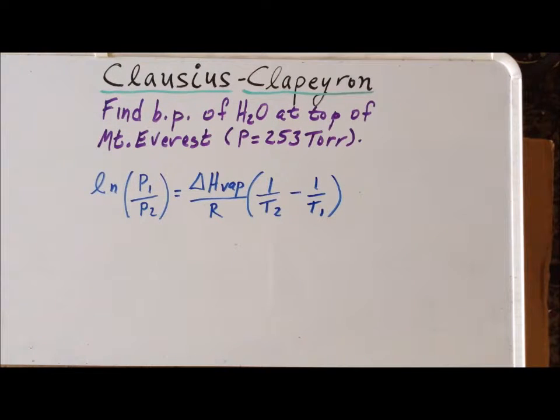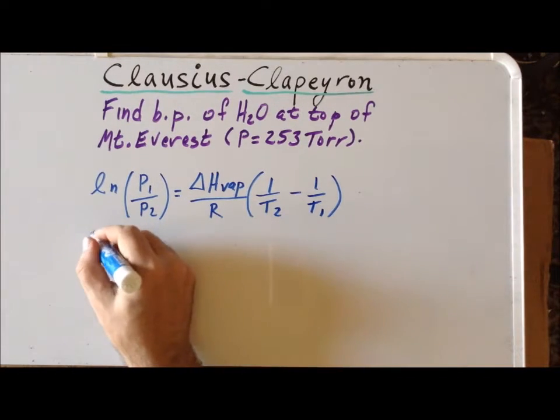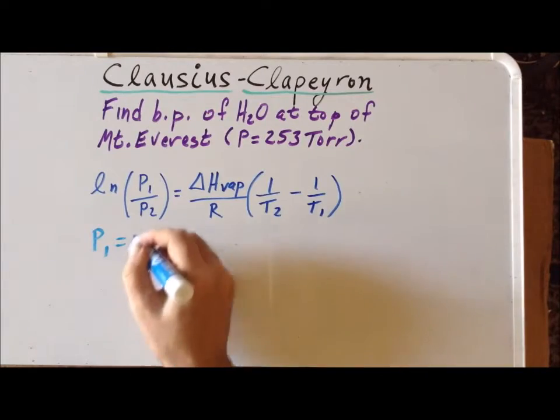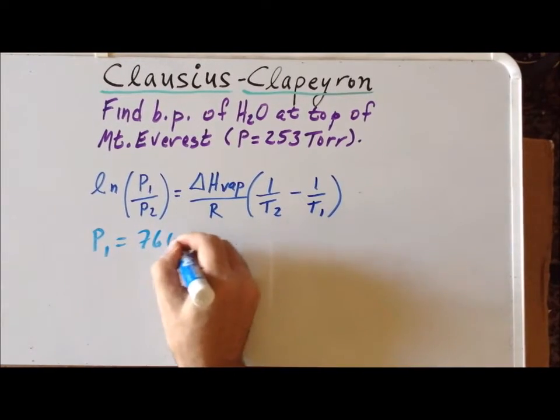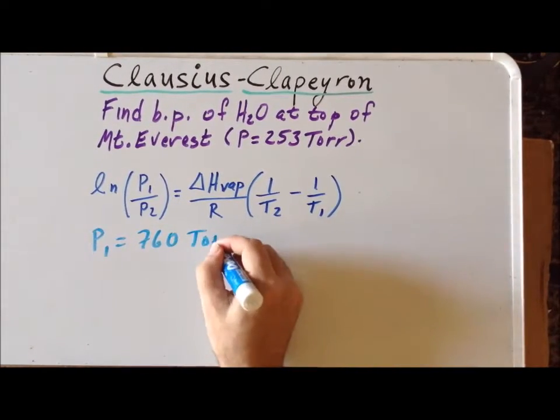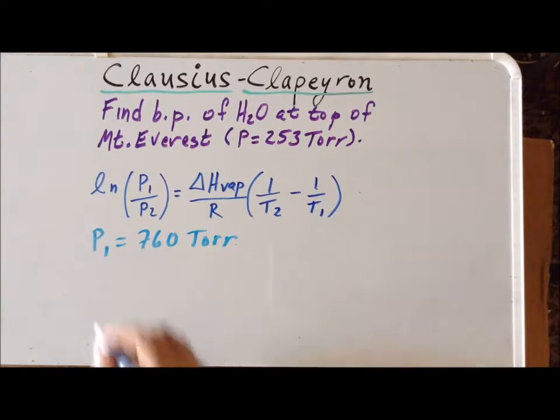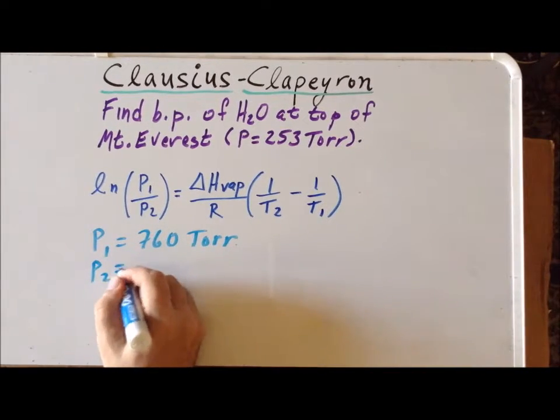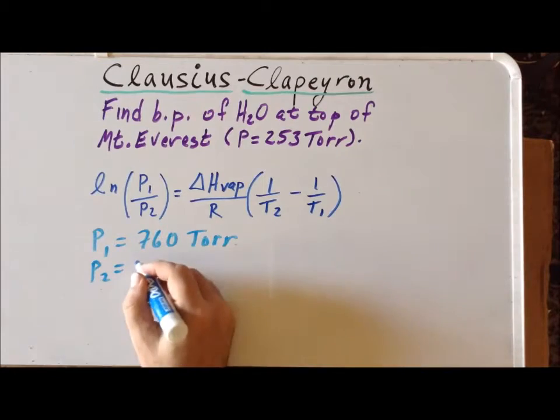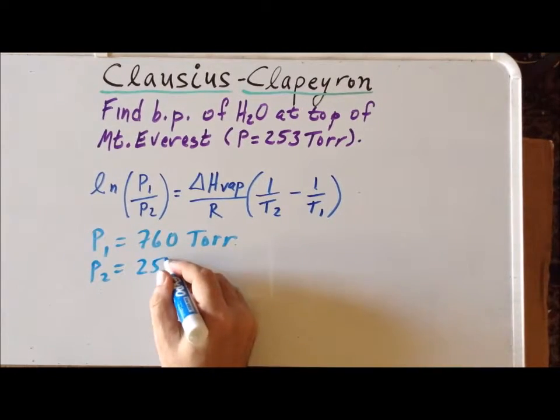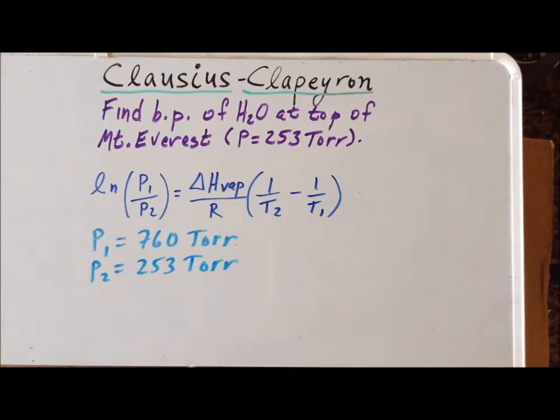For the particular problem here, we are talking about water and our P₁ is going to be 760 torr, which is our ordinary 1 atmosphere. Our P₂ is the pressure at the top of Mount Everest, which is 253 torr.